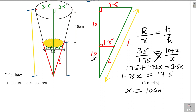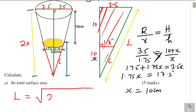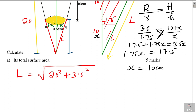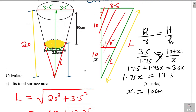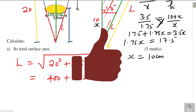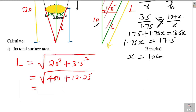So the height of the smaller cone is 10, making the height of the bigger cone 10 plus 10 equals 20 centimeters. Using Pythagoras theorem on the right-angle triangle, the slant height L of the bigger cone equals the square root of 20 squared plus 3.5 squared. Working that out gives L equals 20.304 centimeters. That is the slant height of the bigger cone.